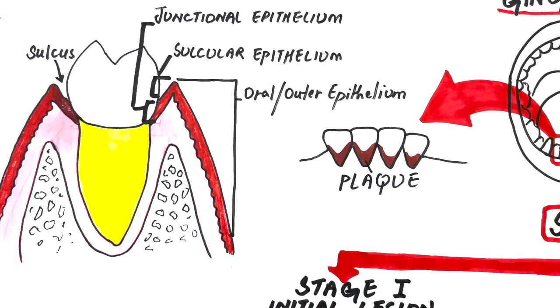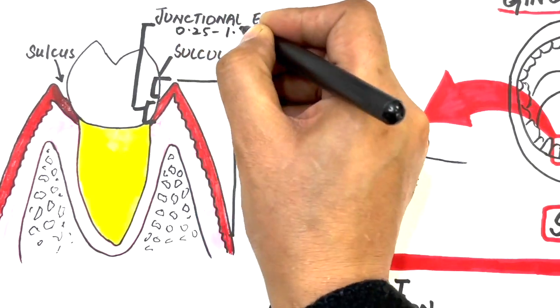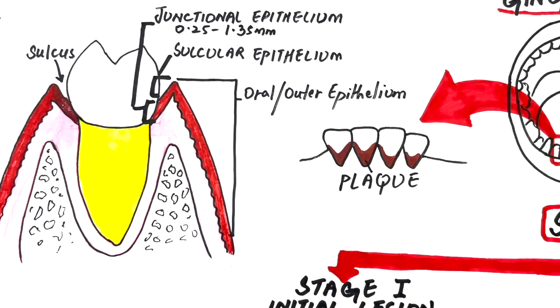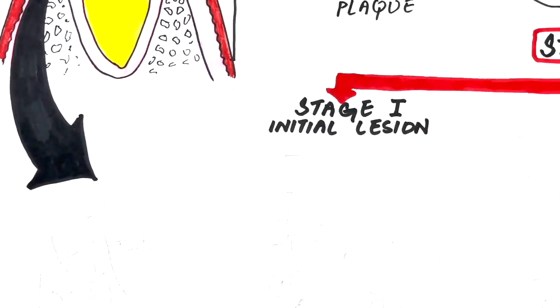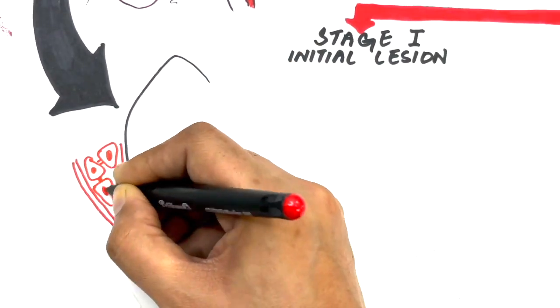Amongst these three epithelia, the epithelium which has the main role in the disease process of gingivitis is the junctional epithelium. The length of the junctional epithelium ranges from 0.25 to 1.35 millimeters. The cells of the junctional epithelium on a closer view are joined with each other through hemidesmosomes.